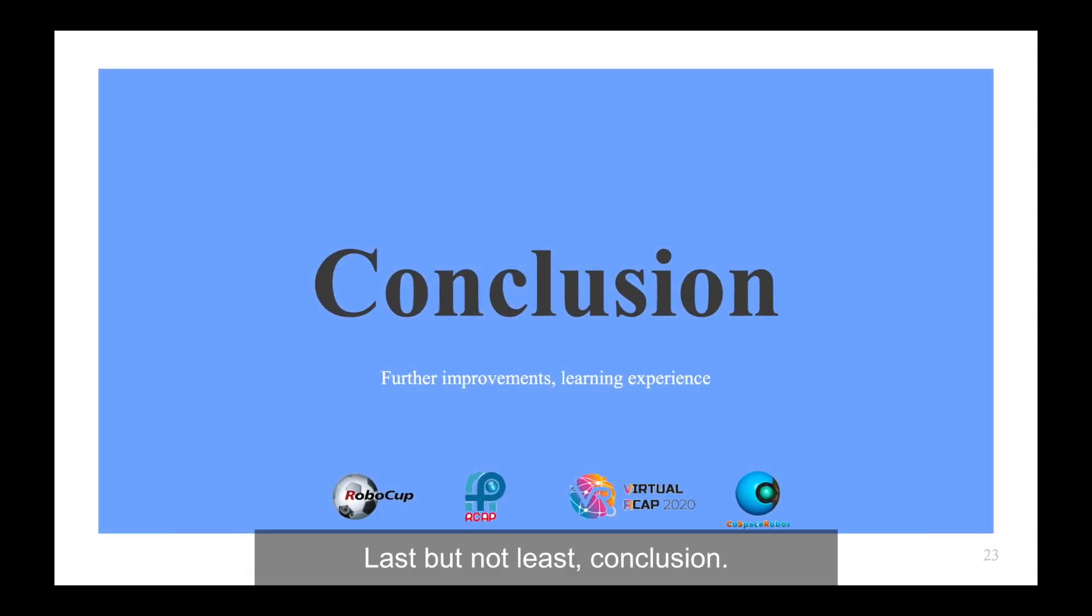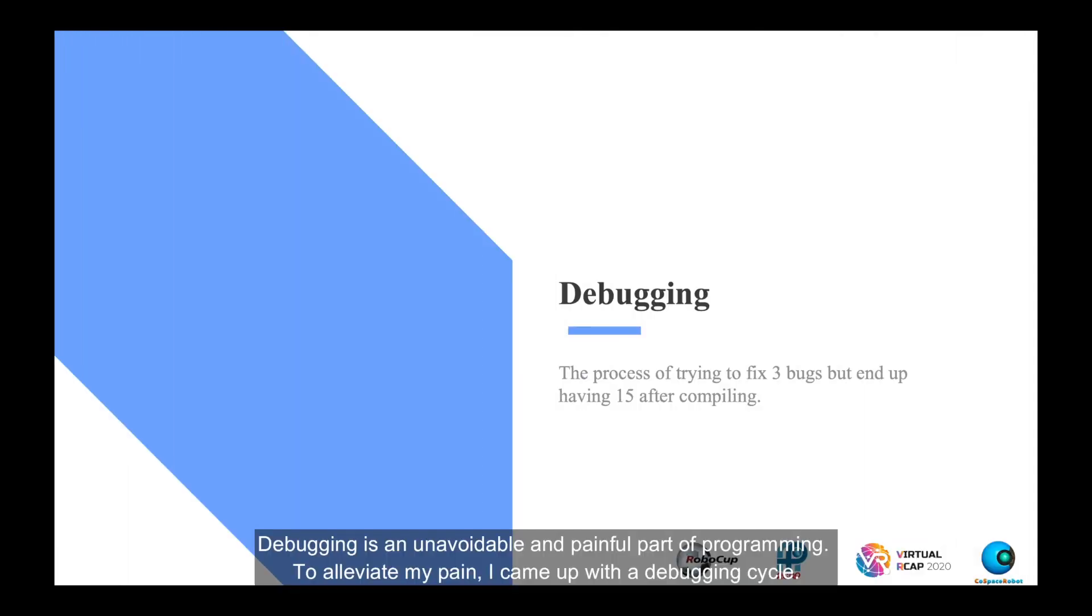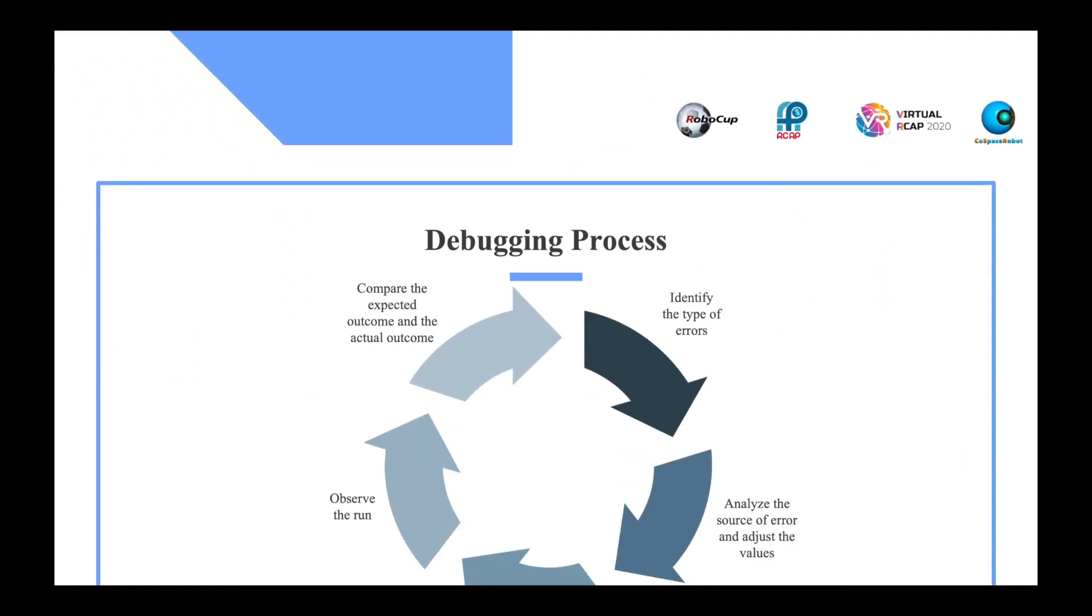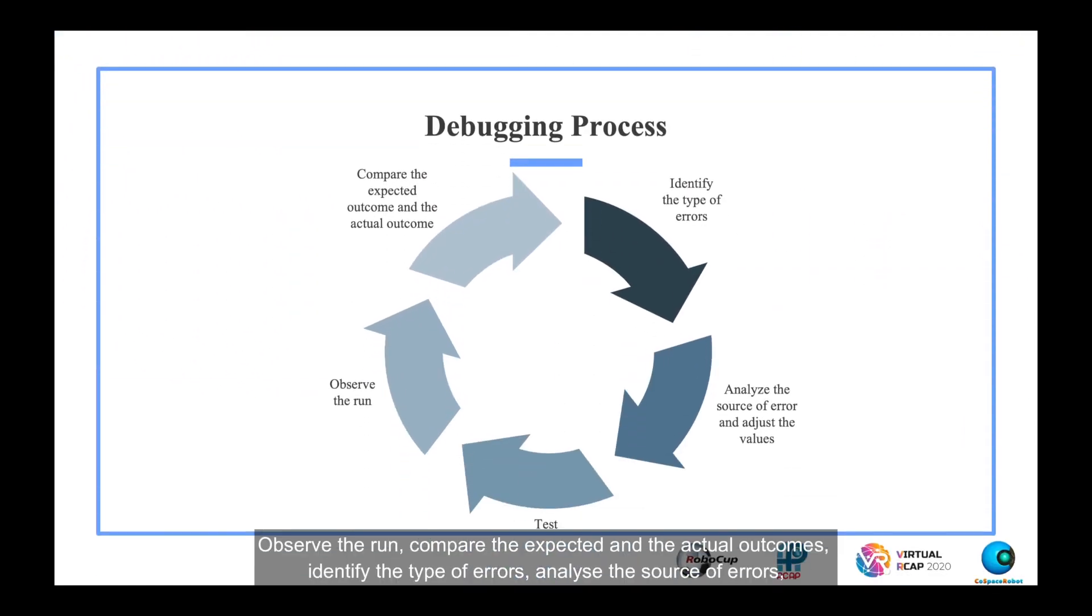Last but not least, conclusion. Debugging is an unavoidable and painful part of programming. To alleviate my pain, I came up with a debugging cycle: observe the run, compare the expected and the actual outcomes, identify the type of errors, analyze the source of errors, make relevant changes, and the cycle repeats to detect and eliminate more bugs.